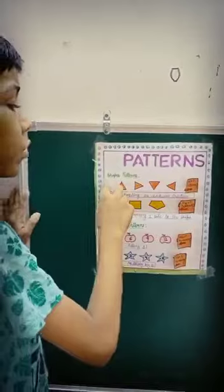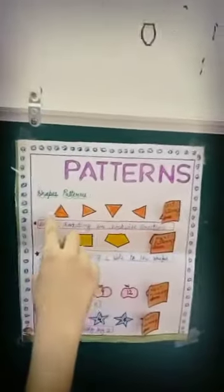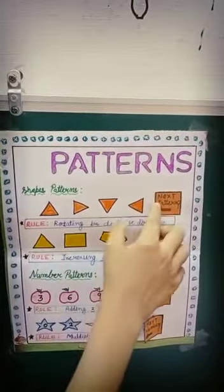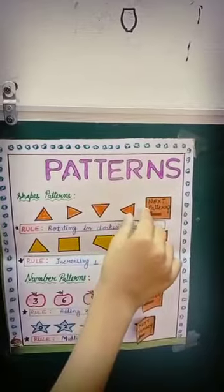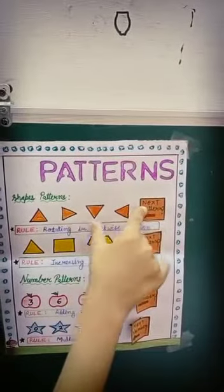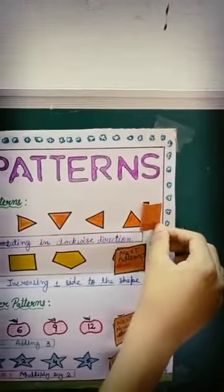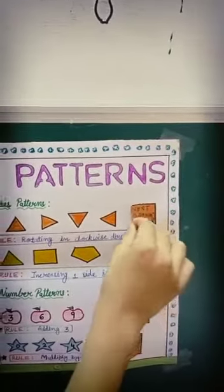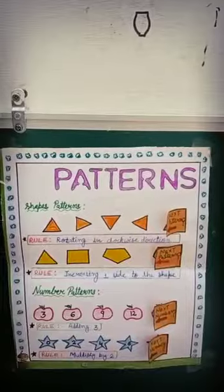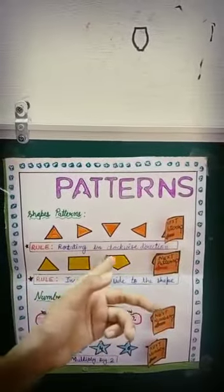First, I will explain shape patterns. These are some triangles and they are rotating in a clockwise direction. So the next pattern will be this triangle, and the rule is rotating in a clockwise direction.